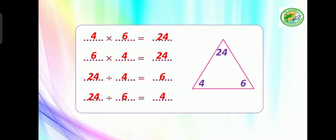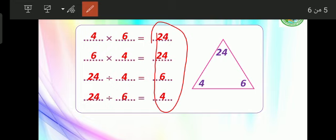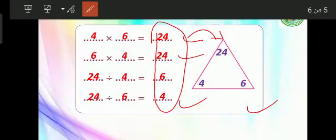Look at the answers. This is the answer — these answers are inside this triangle. 24 is the larger number, and 4 and 6 are also the factors of 24. That's the meaning of the fact family and the relations between multiplication and division.